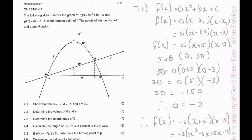The points of intersection of f and g are H and A. Question 7.1 says: show that a = −2, b = −4, and c = 30. We know that the equation of a parabola is ax² + bx + c, and we have the roots. We are going to substitute the two roots: we have (x − (−5)) and (x − 3), giving us a(x + 5)(x − 3).